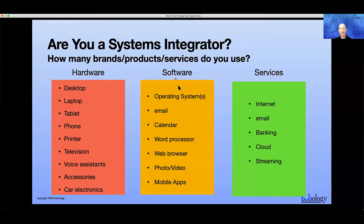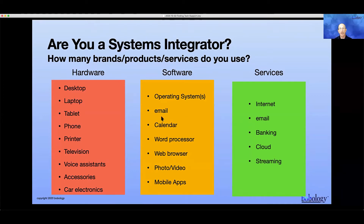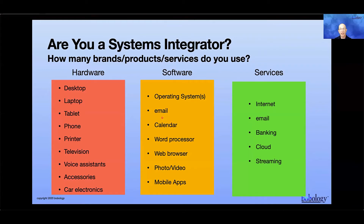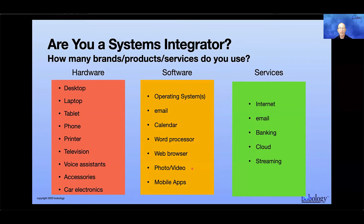Then you've got software, an operating system. If you bought a Hewlett Packard or a Dell computer, you could have an operating system made by Microsoft. If you have a Samsung phone, you might have an Android operating system — Samsung does not make Android, Android is made by Google. You might have an email account from Yahoo or Hotmail, a calendar from a different company, a word processor from another company, a web browser from somebody else, photo or video editing software like PowerDirector.